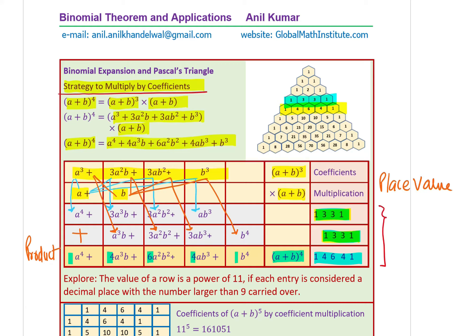Let's take an example: we'll find the coefficients for (a+b)⁵ by multiplication. We have the fifth row giving coefficients for (a+b)⁴: 1, 4, 6, 4, 1. You just shift one position for place value and add them up, and you get the coefficients for (a+b)⁵: 1, 5, 10, 10, 5, 1. That is what is written in the sixth row of Pascal's triangle.